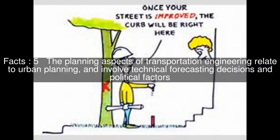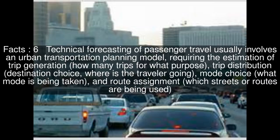The planning aspects of transportation engineering relate to urban planning and involve technical forecasting decisions and political factors. Technical forecasting of passenger travel usually involves an urban transportation planning model, requiring the estimation of trip generation — how many trips for what purpose — trip distribution, and destination choice — where is the traveller going.